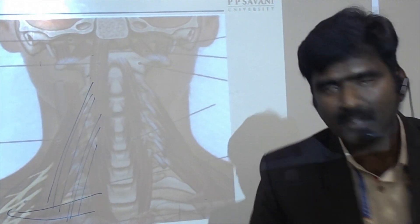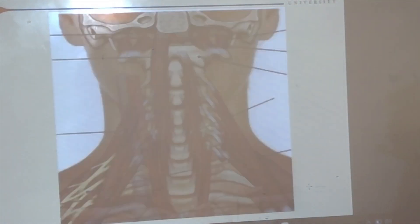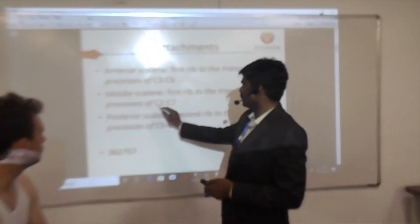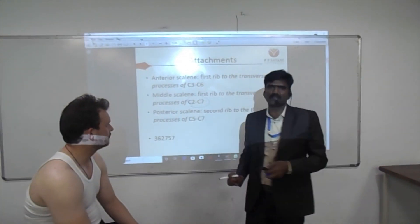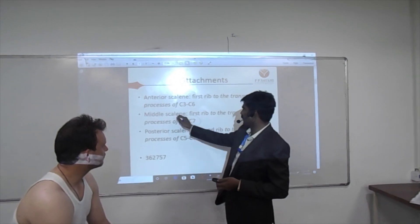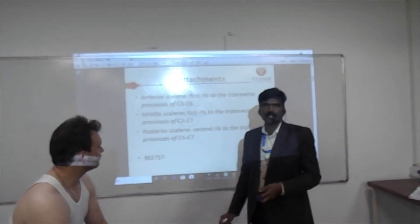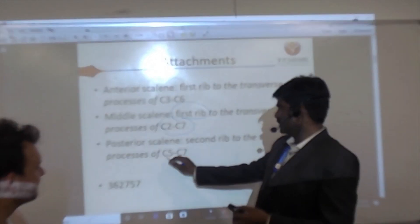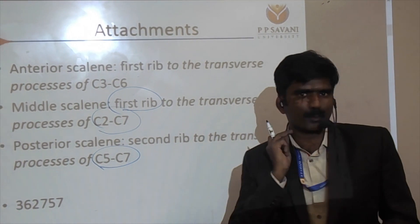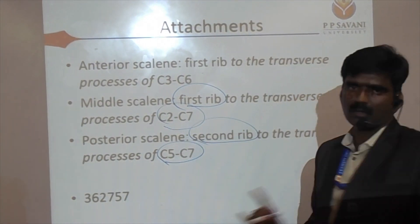The second muscle is the Middle scalene. Its attachment originates from the transverse processes of C2 to C7, and it is also inserted into the first rib. The Posterior scalene attachment originates from the transverse processes of C5 to C7, and its insertion is the second rib — not the first rib.